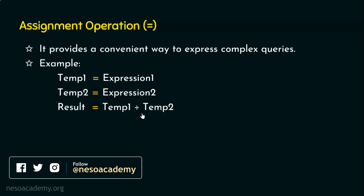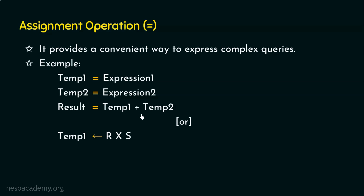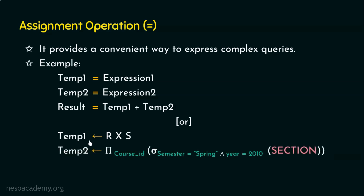As mentioned, the equals symbol may be used for the assignment operation, and some conventions use the left arrow. For example, temp1 ← R × S stores the Cartesian product of R and S into temp1. In another example, temp2 can represent the output of a projection over R ∪ S. Such complex queries can be easily expressed using temporary relation variables, making the assignment operator very handy.